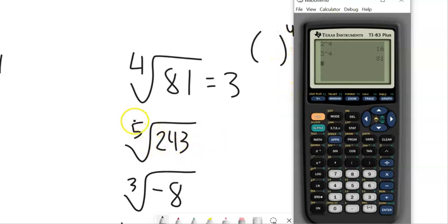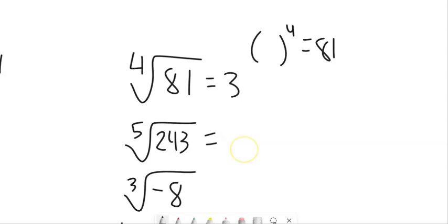What to the fifth power is 243? I don't know. Let's try 3. 3 to the fifth. 243. And I guessed 3 because it ended in a 3. So I knew it was going to be an odd number.